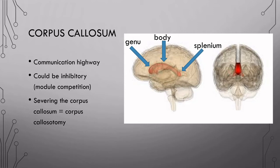The corpus callosum is the major communication highway in the brain. But it could also serve an inhibitory function. The brain is made up of distinct modules, and they often compete with one another. The corpus callosum may play a role in interfacing with these different modules, where modules compete with one another for a spotlight in our conscious thoughts.